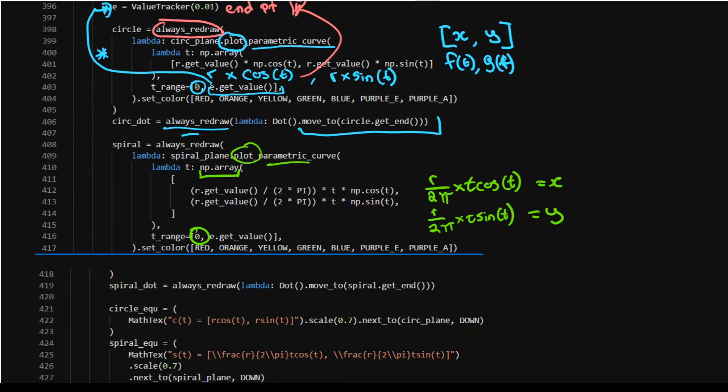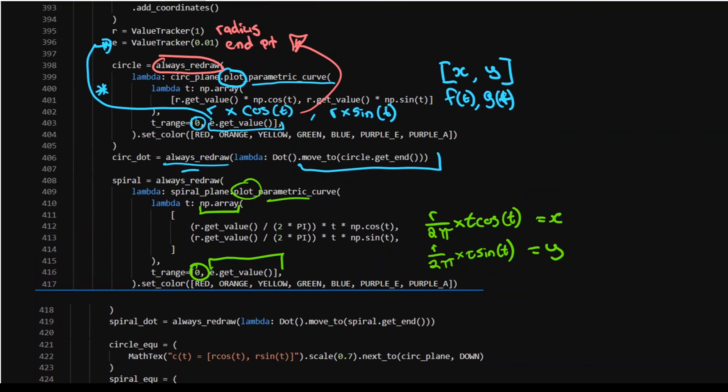The T range goes from zero to that same value tracker, the same guy up there. Again, the colors of the rainbow. And we've put a dot on the end of that, get end of that.